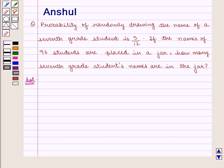Let us move on to the solution. In this question, we are given the Probability of drawing a 7th grade student's name from the jar which is equal to 5 upon 12. Let event A be equal to drawing 7th grade student's name.